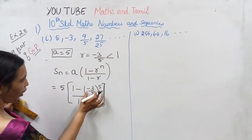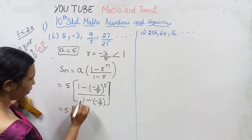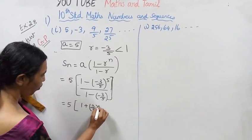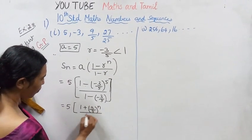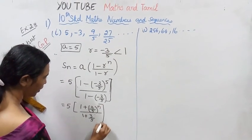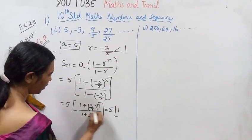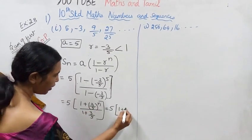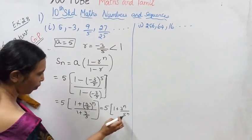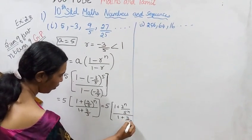OK. 1 minus r power n divided by 1 minus r, that is equal to 5. So r — I get minus into minus, which is plus: 1 plus 3 by 5 the whole power n, divided by 1 plus 3 by 5. The denominator is 1 plus 3 power n by 5 power n, divided by 1 plus 3 power n.